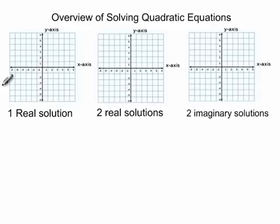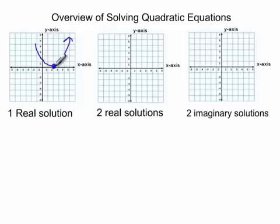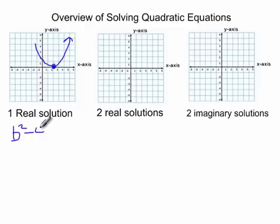Quadratic equations could possibly have only one real solution. This is when the parabola comes down, touches, and goes back up — I only have one x there. When does this happen? This happens when my discriminant, which is b squared minus 4ac, is equal to zero. That's when I have only one real solution.